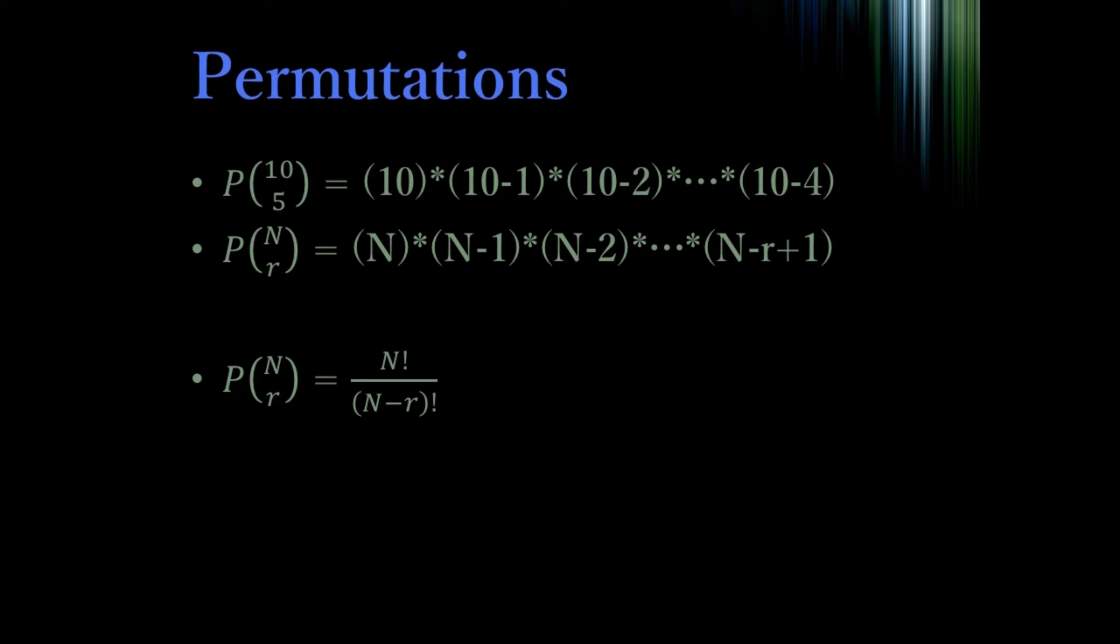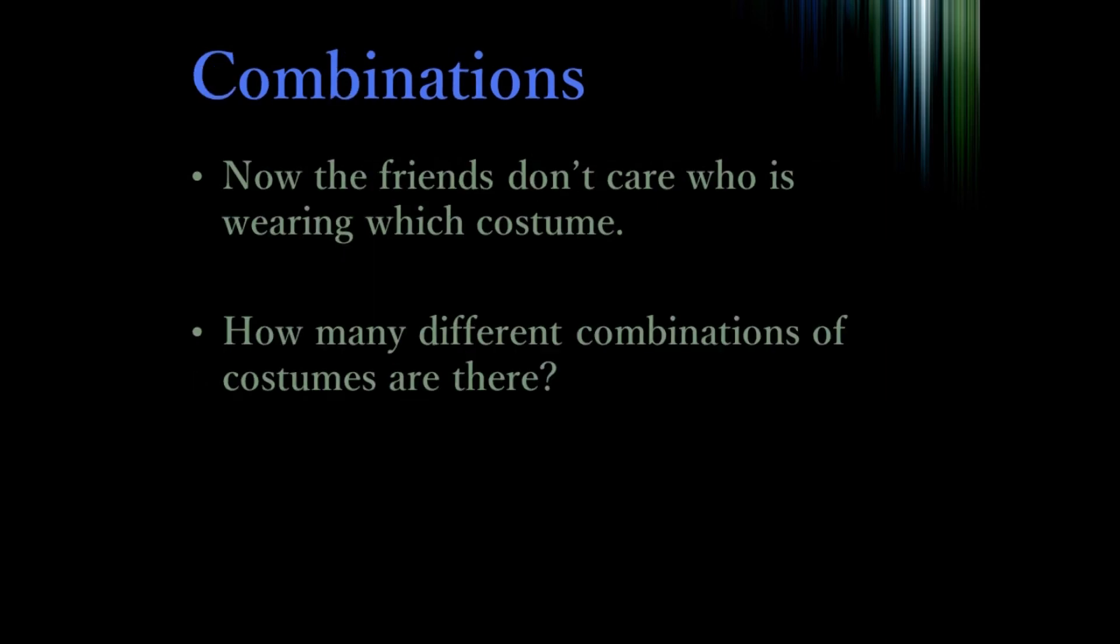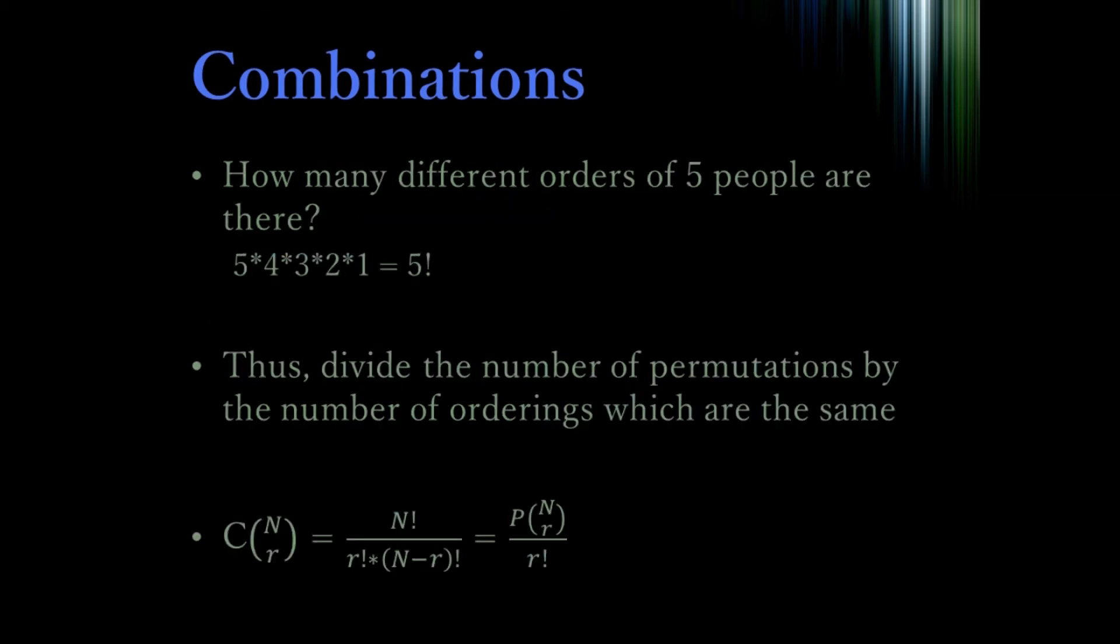But what if the friends don't actually care who is wearing which costume? Well, the first thing that we should do is we should figure out how many different orders of the five people are there. Five different people could be the first person, four different people could be the second person, and then three could be the third person, and then two could be the fourth person, and then there's only one person left who's the last person. This means that there are five factorial different orders of five people.